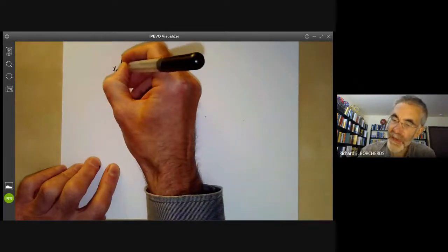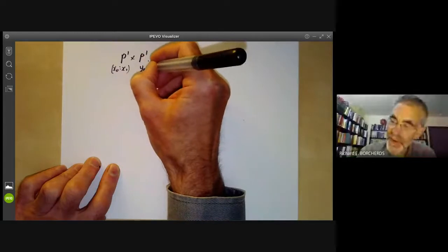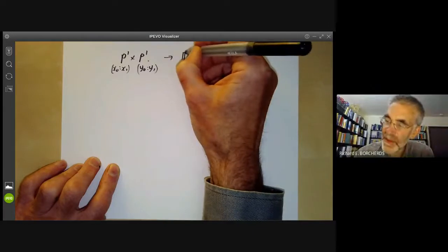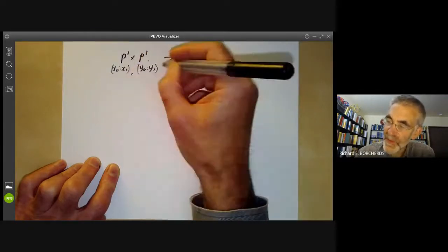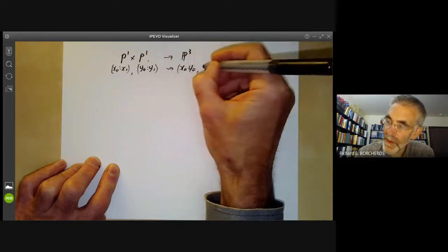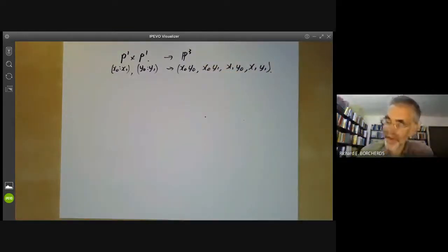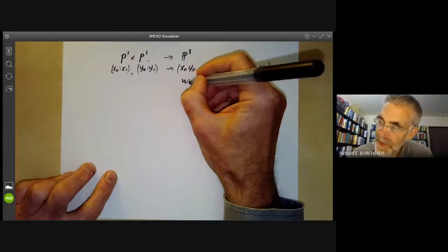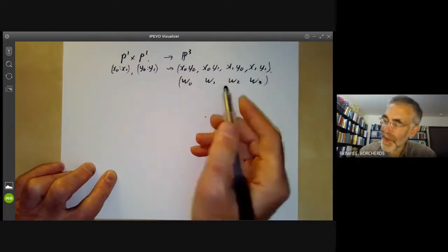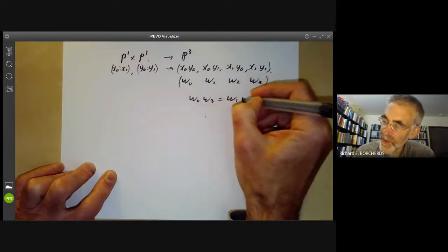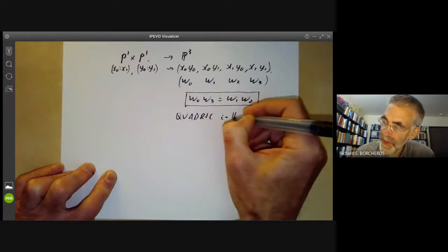Here we have points (x_0 : x_1) in P^1 and (y_0 : y_1) in P^1. We map to P^3 (since 1·1 + 1 + 1 = 3), sending these two points to (x_0 y_0 : x_0 y_1 : x_1 y_0 : x_1 y_1) in P^3. If we call these coordinates w_0, w_1, w_2, w_3, we get only one relation: w_0 w_3 = w_1 w_2. So the image is a quadric in P^3.